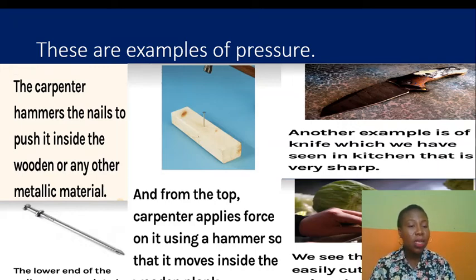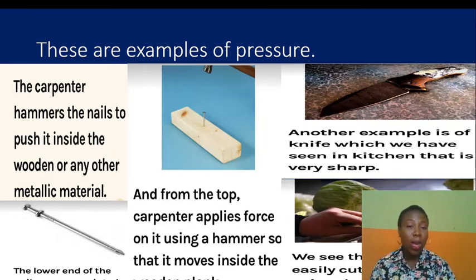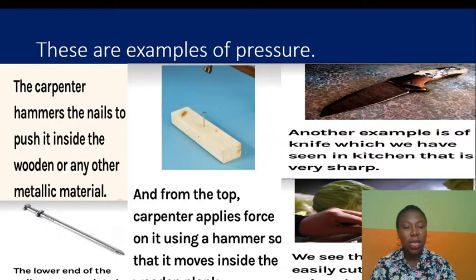Another example is the knife we use in our kitchen. If it is not sharp, we cannot cut our vegetables or other food items easily, but when we have a very sharp knife it cuts vegetables and other food items easily.